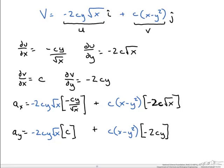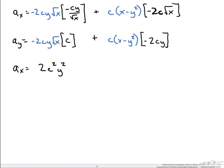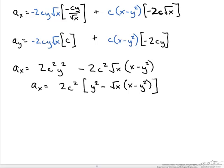Simplifying the x component: the first term gives 2c squared y squared, and the second term gives minus 2c squared times the square root of x times the quantity x minus y squared. This can be further simplified to yield the x component of acceleration.